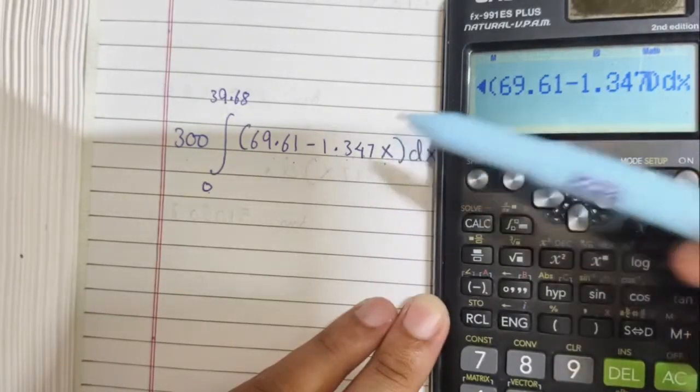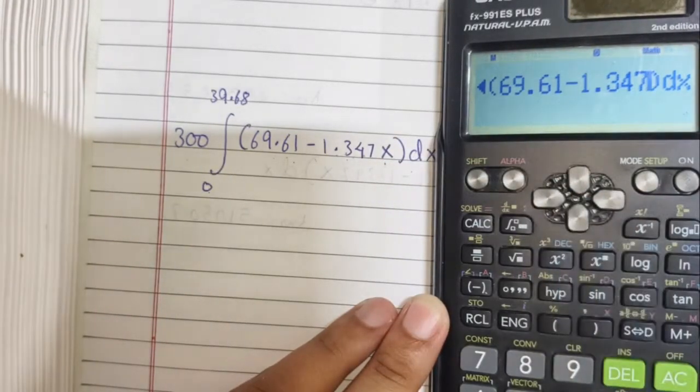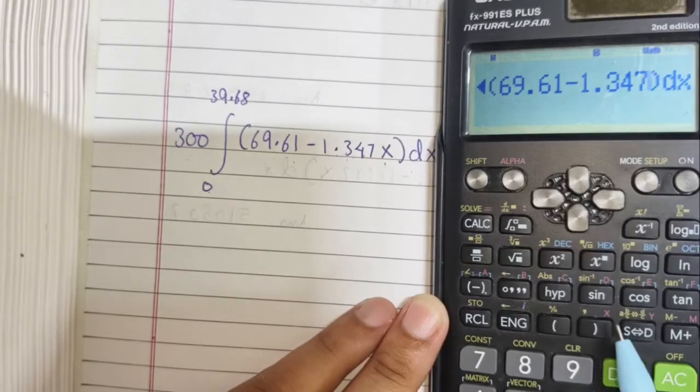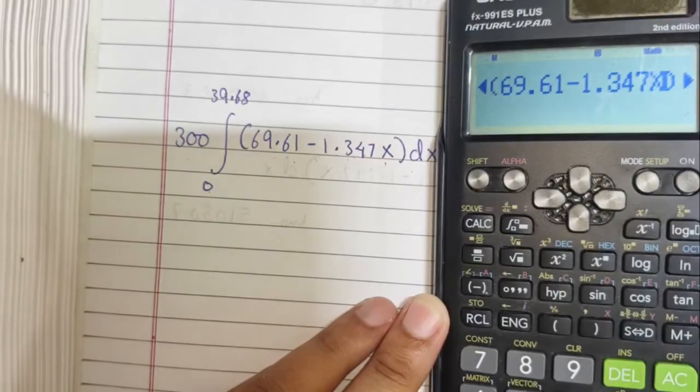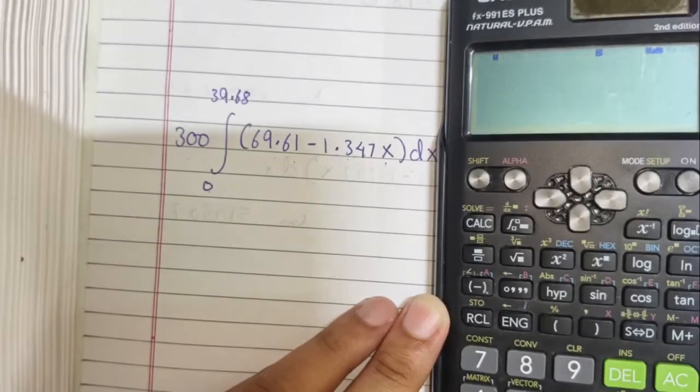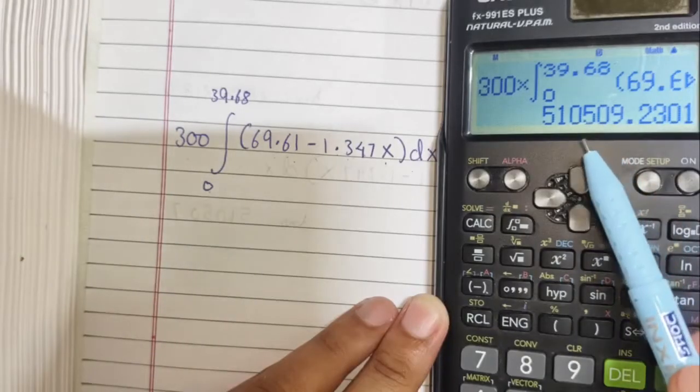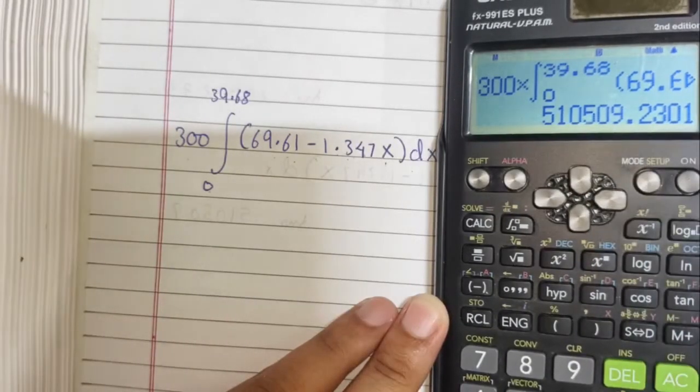Now, how do we get this x? We will use this alpha function, and choose x from here. Alpha, x. Here, you have your x. Click on the equal to sign, and you will get your answer. 510509.23 is the answer.